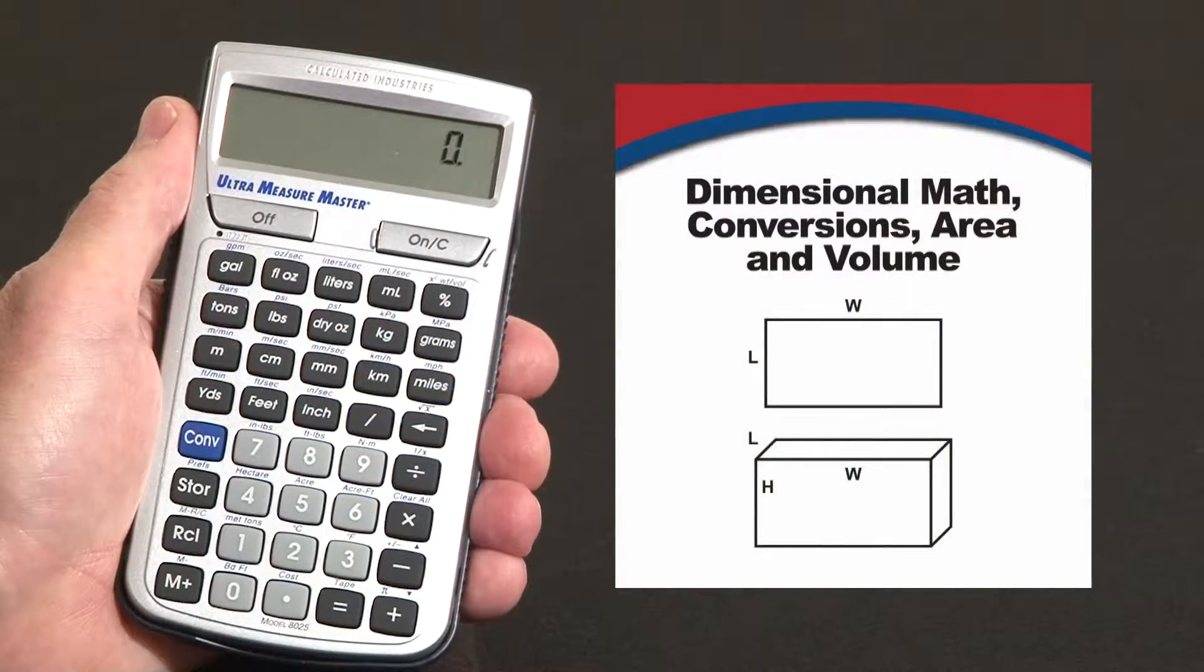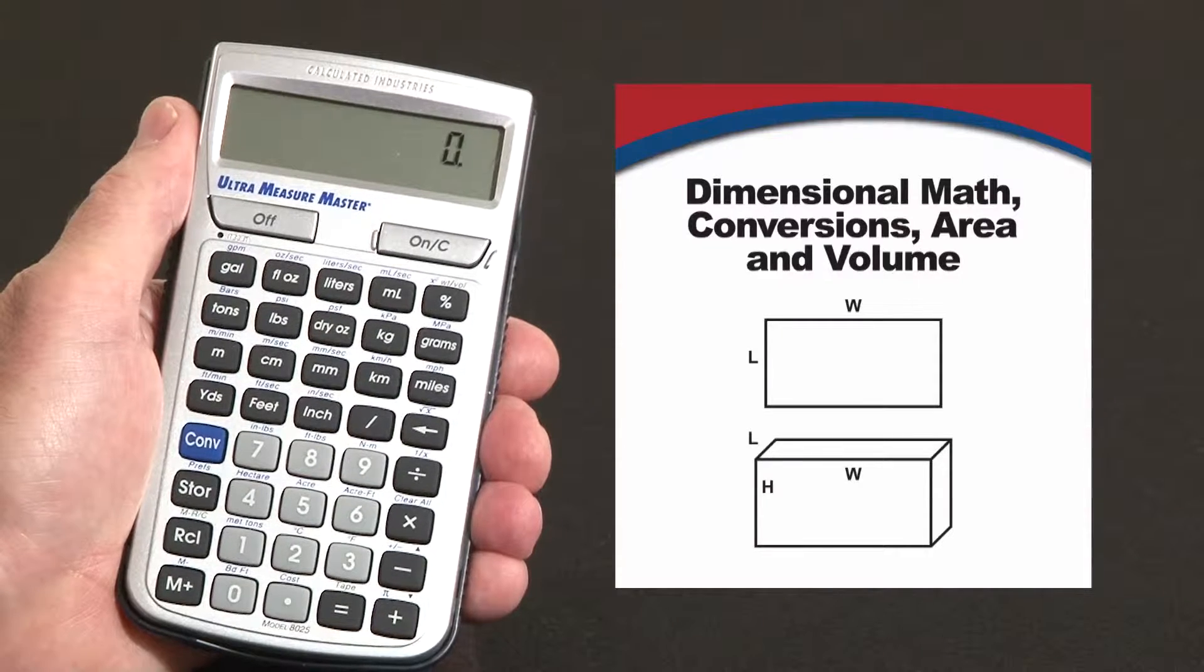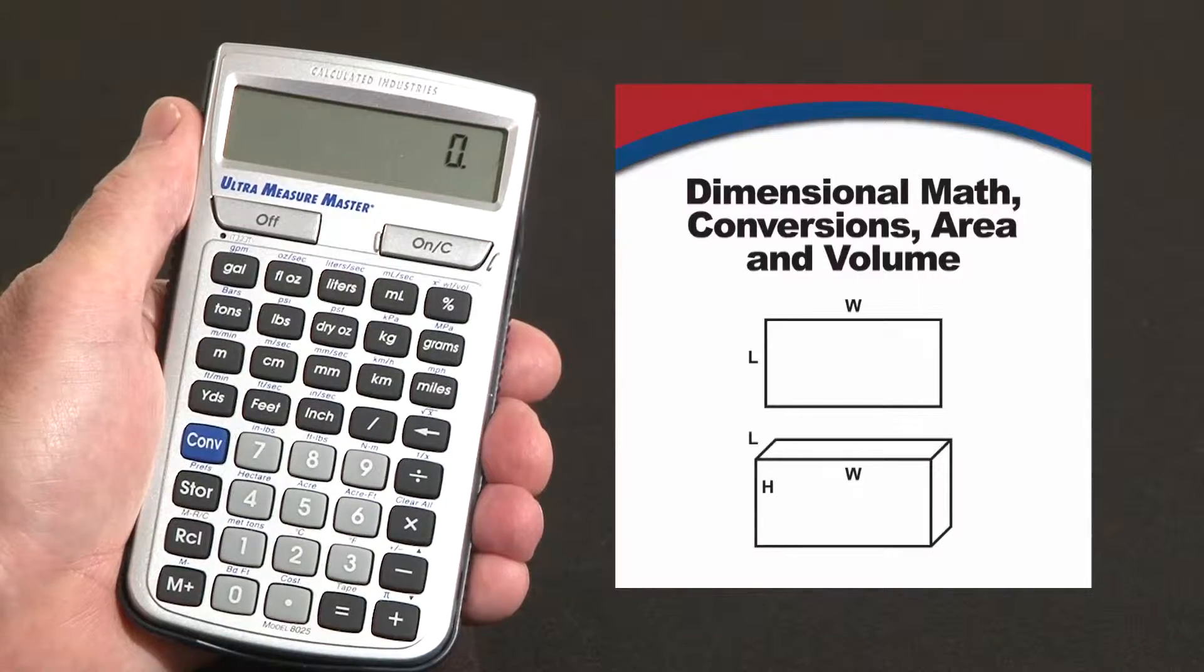Now let me show you how to do linear area and volume and dimensional math and conversions using your Ultra Measure Master. First off, you can enter dimensions pretty much the way you say them.